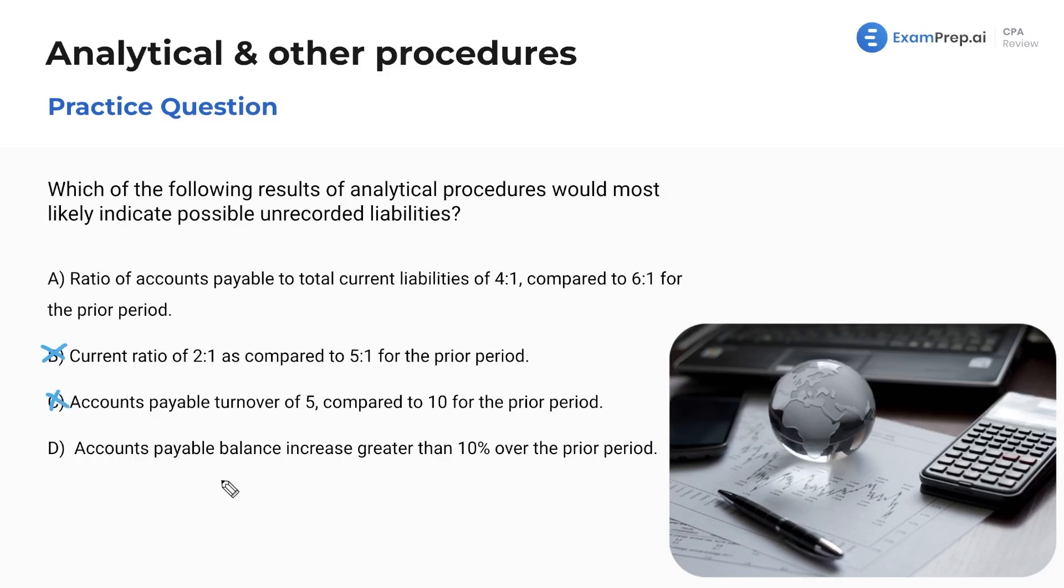And then lastly, for letter D here, accounts payable balance increase greater than 10% over the prior period. Now, this is just saying that's compared to last year, we just have more liabilities. So like this one, we're saying, okay, if liabilities are going up, that wouldn't particularly indicate unrecorded liabilities, that just would report that would indicate more liabilities. So best answer here is going to be letter A, because that indicates that there are less liabilities as compared to last year. And because there are less, it could mean that we maybe have the same amount, the company just didn't record them, and they're trying to hide them. That is the point of what we're doing here. That is fully exhaustive thought process of it. And I hope you enjoyed.